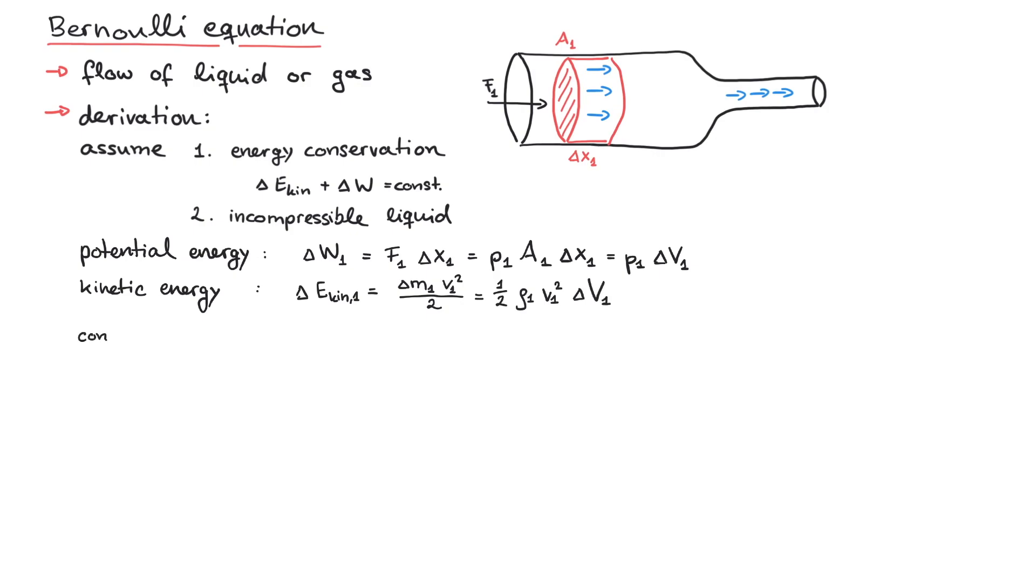Because of energy conservation, the sum of these two energy contributions is constant. Now, the same argument can be repeated for a different cross-section A2, and the sum again yields the same constant total energy.